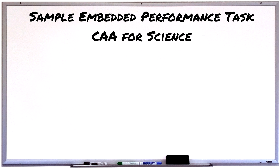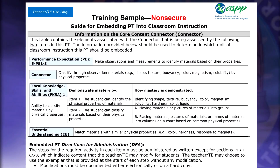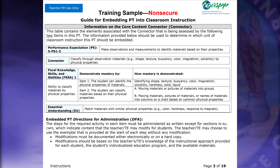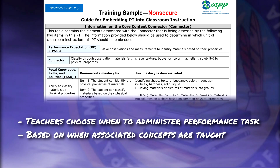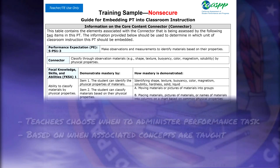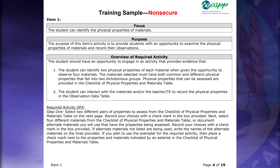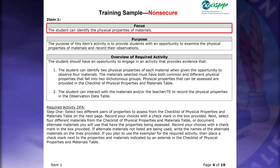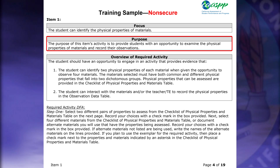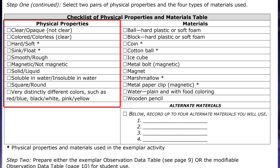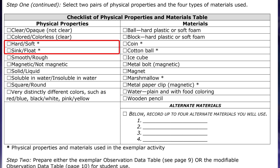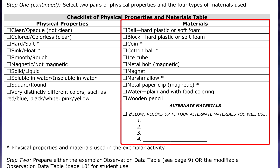How does an embedded performance task work? Before administering the CAA for Science, test examiners are given guidelines on how to administer the assessment. Teachers can choose when to give each performance task according to when the associated concepts have been taught to the student. In this sample item, the performance task requires students to identify physical properties of materials through various forms of observation. Test examiners can choose two different pairs of properties from the list to test — in this example, the properties are hard or soft and sink or float. Test examiners can also choose from the list of suggested materials a student can observe, or write in alternate materials that are not on the list.